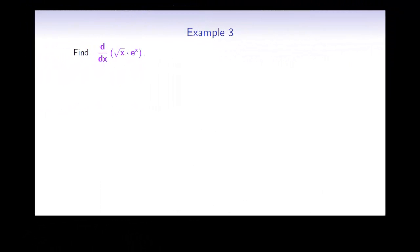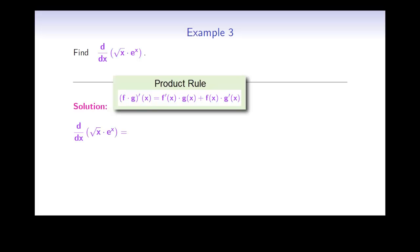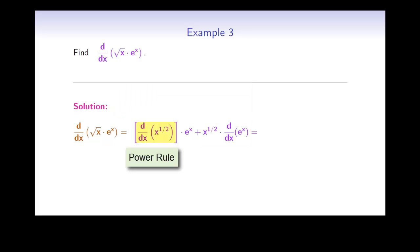In this example, we need to find d/dx of root x times e to the x. d/dx is just another notation for the derivative of a function. So what we need to do here is differentiate the product, square root of x times e to the x. According to the product rule, the derivative of this product will be equal to the derivative of the first factor, x to the 1/2, times e to the x, plus x to the 1/2 times the derivative of the second factor, which is e to the x. The derivative of x to the 1/2 can be computed using the power rule, and the derivative of e to the x is just equal to e to the x.